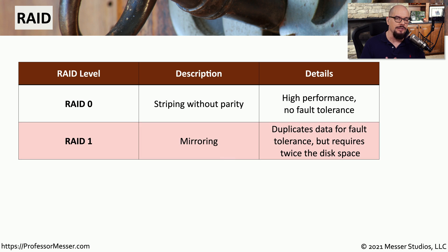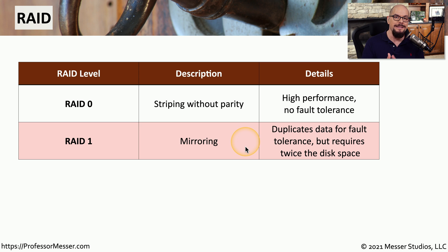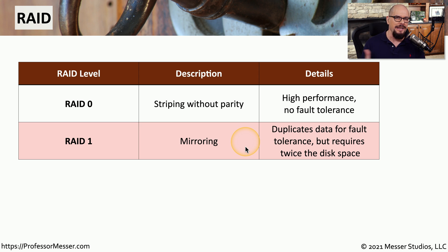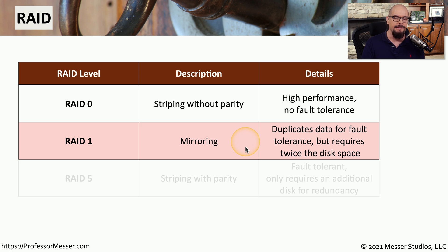That's why most places will start with a RAID 1 at a bare minimum. RAID 1 is what we call mirroring, where we can take one physical drive and duplicate all of the data on that physical drive to a separate physical drive. It's a mirror of the information. That way, if we lose any one of those drives, all the information continues to be available and accessible on that separate drive.